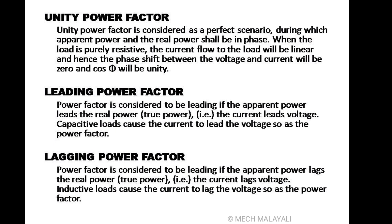The unity power factor has a value of 1. In a pure resistive load, apparent power and real power are in phase, meaning the phase shift between voltage and current is zero, so the cosine value equals 1. This is the unity power factor.